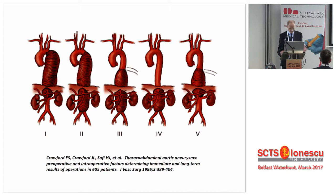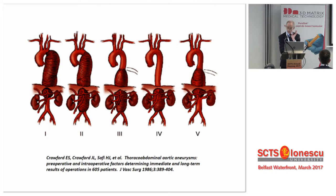What are we talking about? You've seen this slide before. You know the Crawford classification based on the location and the extent of the pathology, with the famous type IV aneurysms, of which type II is the most extensive one, involving almost a complete thoracic and abdominal aorta. Eventually, as Hasim Safi has suggested, the type V can be added, which is nothing more than a combination of type I and type III.